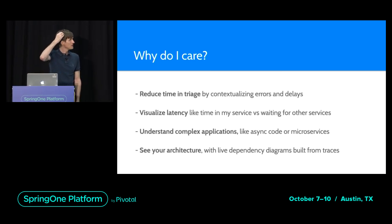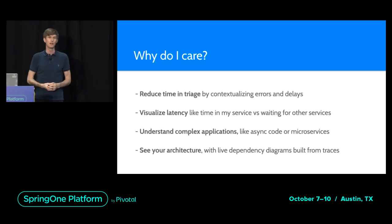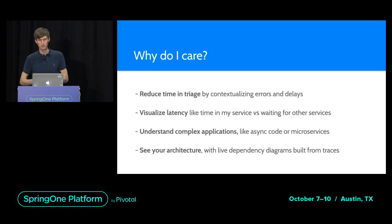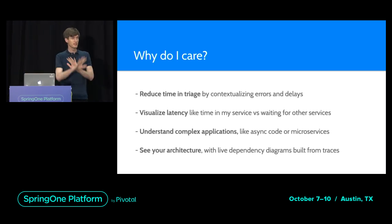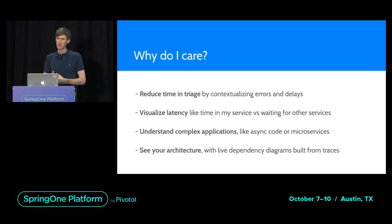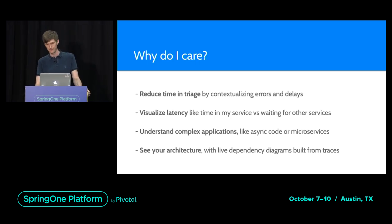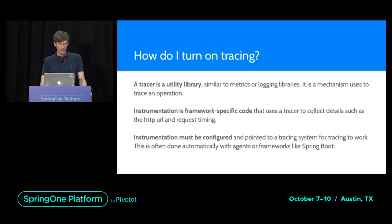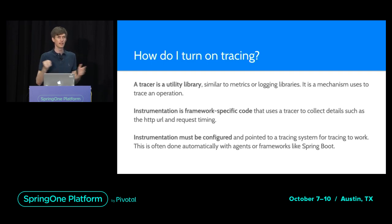A huge feature people always mention is the topology view — seeing your service architecture and what's calling what. Nobody wants to stare at 300 services, but to the degree you can manage it, seeing these nodes is extremely helpful because we can't always draw these diagrams statically. Architectures are increasingly complex. The next common question is how do you turn it on — there are libraries underneath recording the data, and you'll see the word 'tracer.'